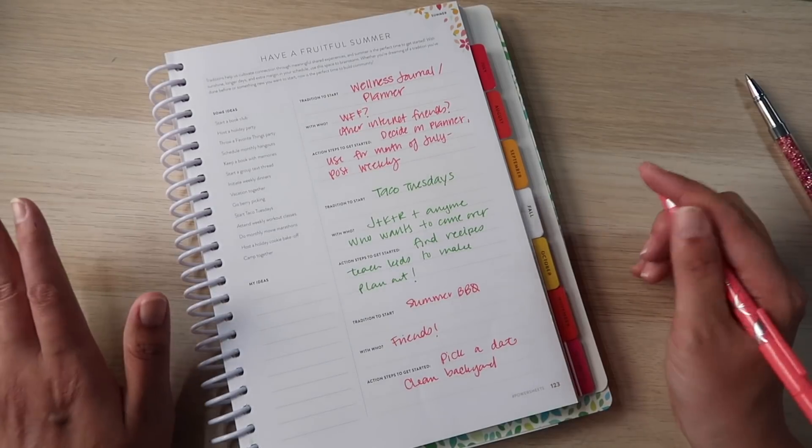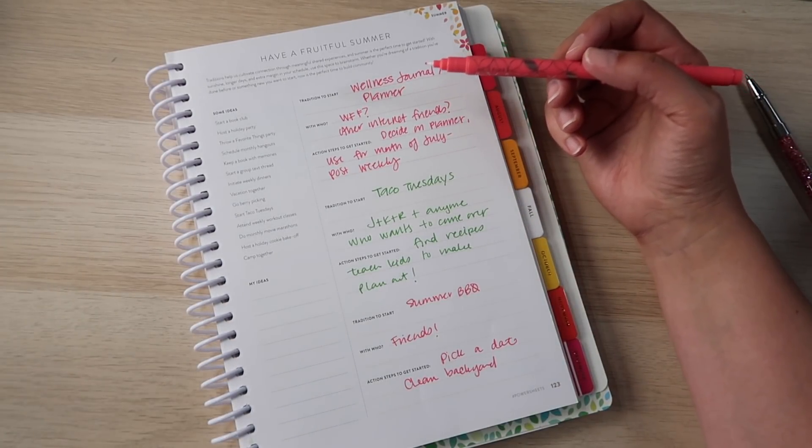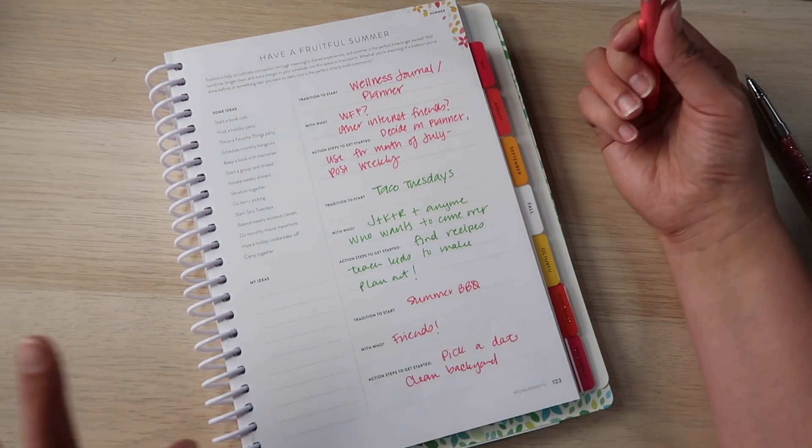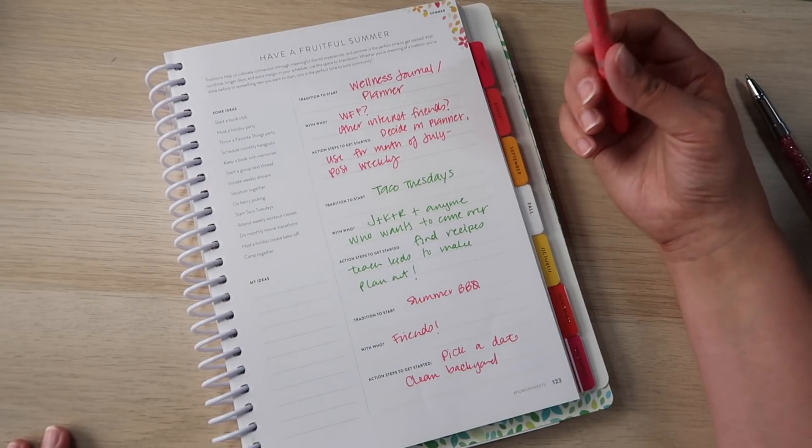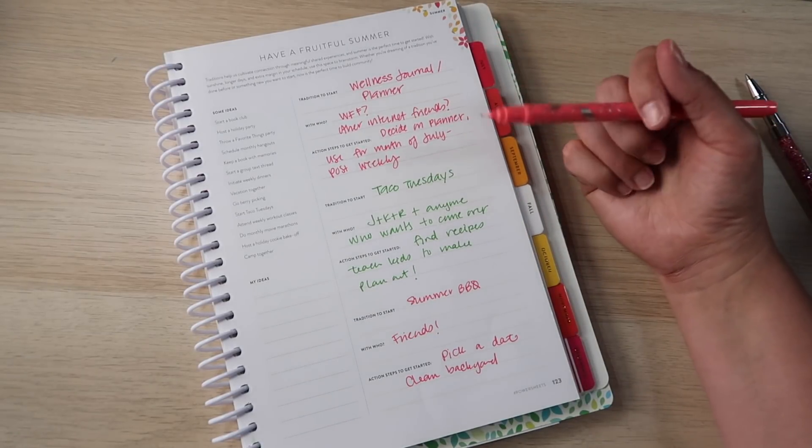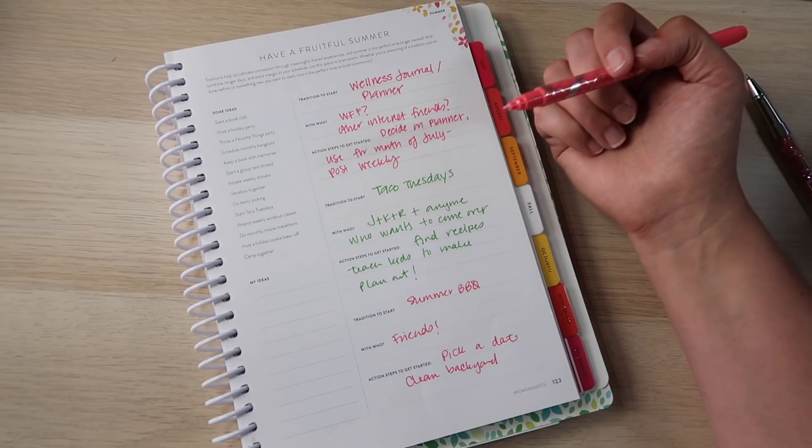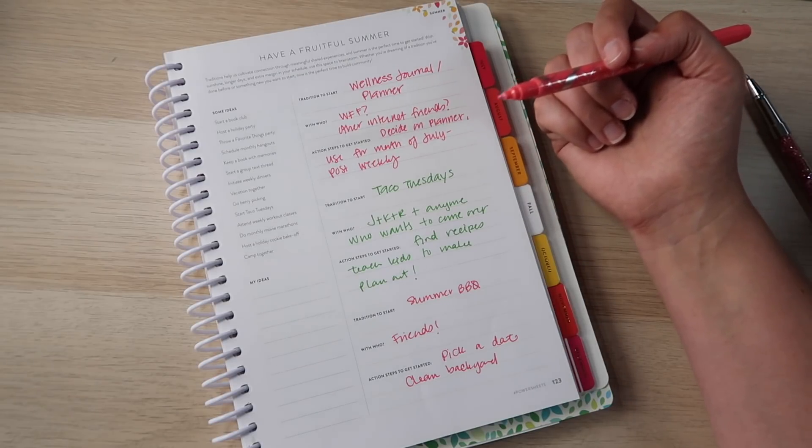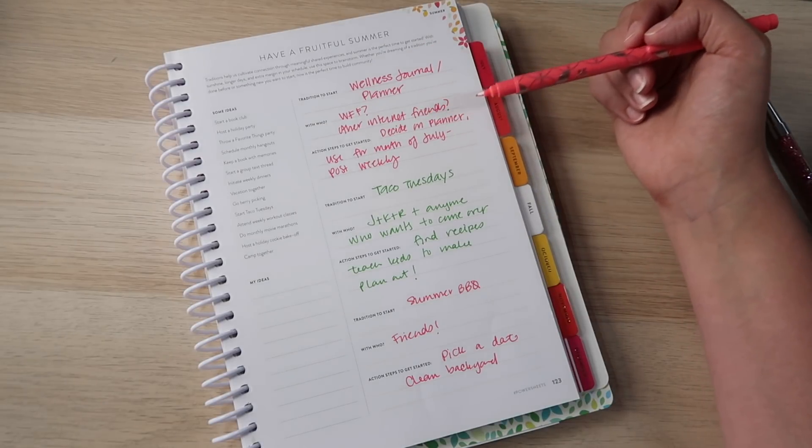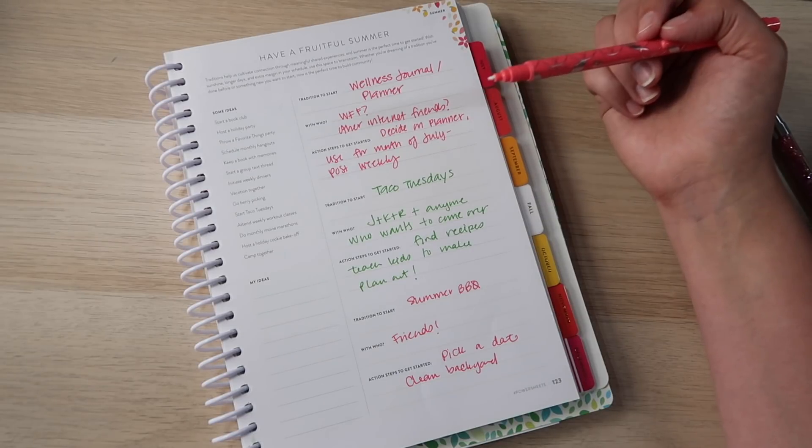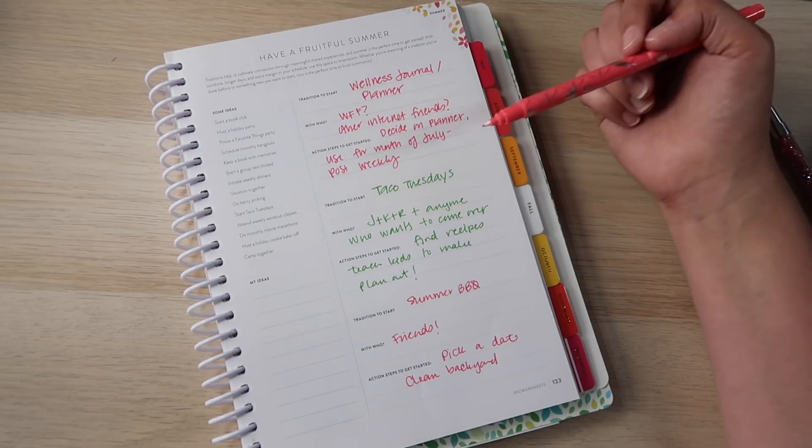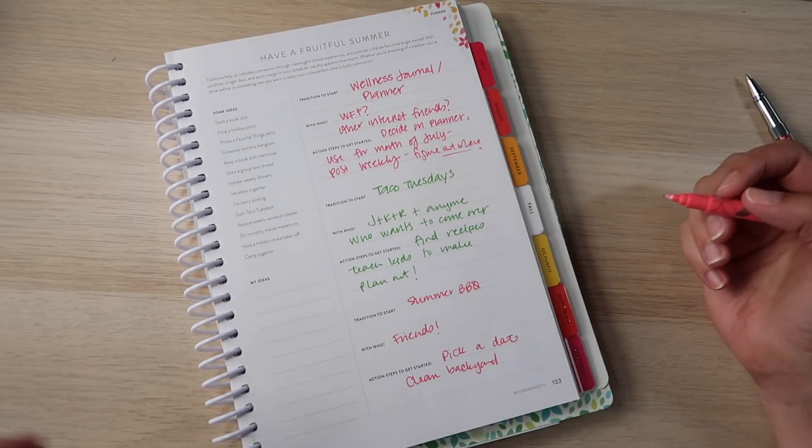All right. So here are the ones that I brainstormed. The first one I've already been talking about. It's a wellness journal slash planner, kind of like the keep a book of memories. Who am I going to share it with? There's the wild for fitness group. There's also a bunch of you on the internet. If I decide to post this in the patron group and in the Big Llamas Love lettering group or on my Instagram, I'm sure I'll find other people who want to join me. So if you might be interested in joining me in documenting your wellness journey, however that might look, let me know in the comments. Or if you're already doing that and you know about people who are already doing it, let me know about that too. The steps to get started, decide on the planner, which I think I've decided on, but I'm not quite sure yet. So stay tuned. Use it for the month of July and post about it weekly somewhere. Figuring out where is one of those steps.